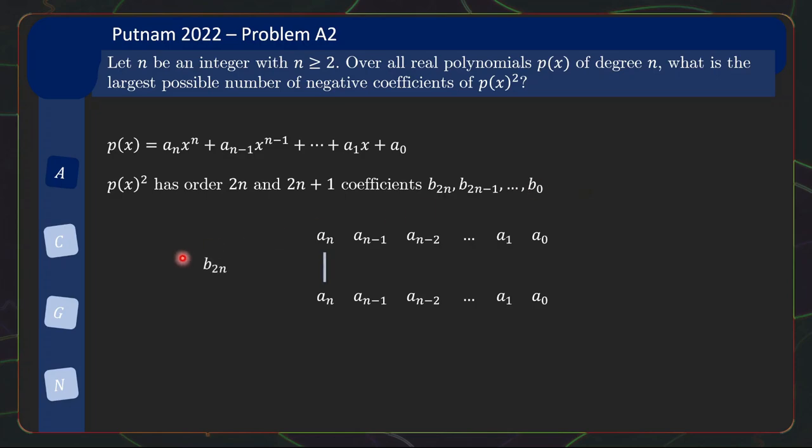If we write out the a's here, then b_2n is just this times this, a_n times a_n. And then b_2n-1, if you imagine now expanding the product in your head, it's a_n times a_n-1, plus a_n-1 times a_n. Right? And this cross pattern continues. So b_2n-2 will be this times this, plus this times this, plus this times this. Right? And this pattern continues.